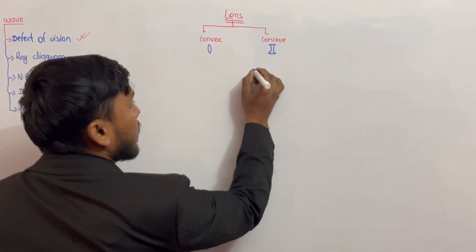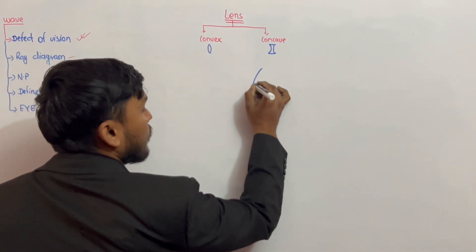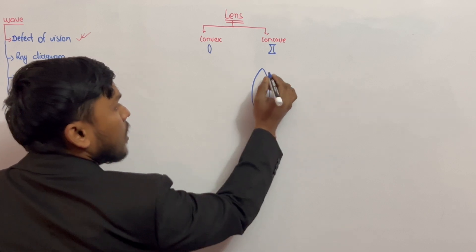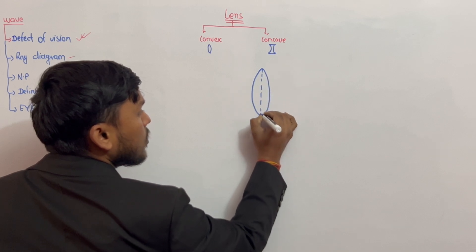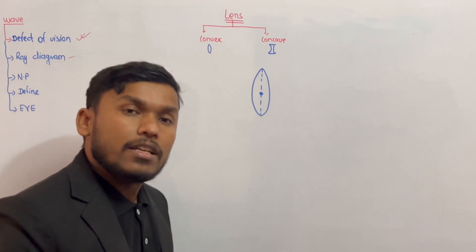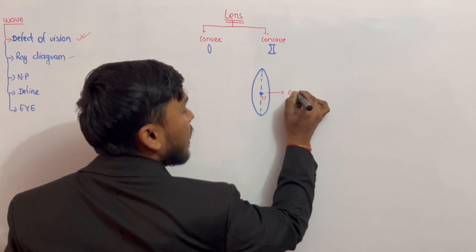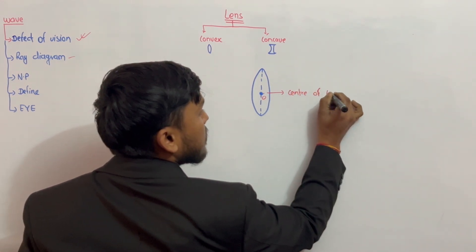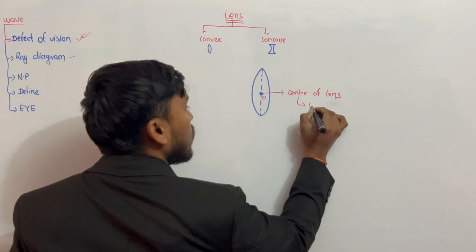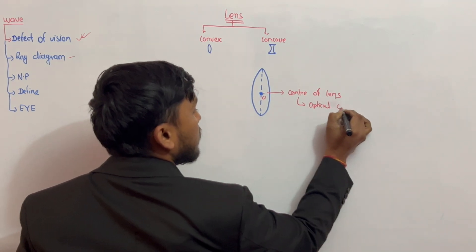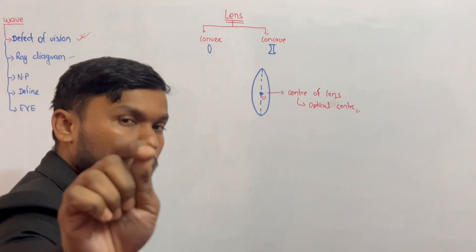In this chapter, you can use the convex lens. The center of the lens is called the optical center.